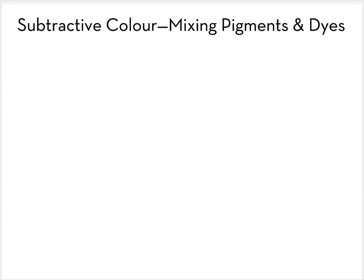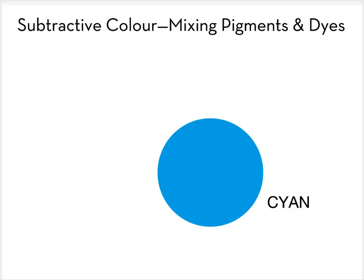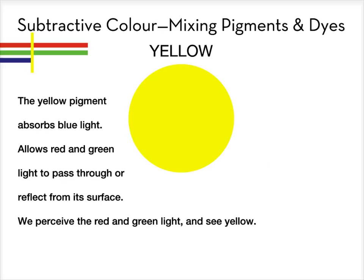In the additive demo, I started with a dark screen onto which I projected colored light. In mixing colored pigments, I begin with a white screen that represents white paper onto which I shall apply different subtractive primary pigments. The three primary pigment colors, or primary subtractive colors, are yellow, magenta and cyan. The yellow pigment absorbs blue light, allows red and green light to pass through or reflect from its surface — we perceive the red and green light and see yellow.